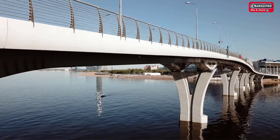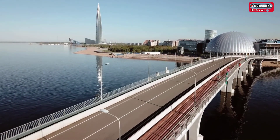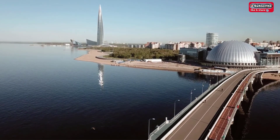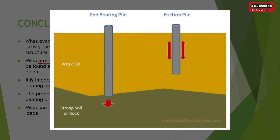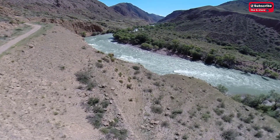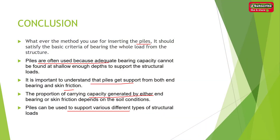Whatever method is used for inserting piles, it should satisfy the basic criteria of bearing the whole load from the structure. Piles are often used because adequate bearing capacity cannot be found at shallow depths. It is important to understand that piles get support from both end bearing and skin friction. End bearing means the piles are supported by a rock stratum; skin friction means resistance is generated by friction along the pile depth. The proportion of carrying capacity from either end bearing or skin friction depends on soil conditions. Piles can support various structural loads like bridges, skyscrapers, or buildings near water bodies.